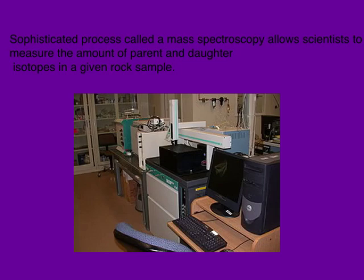Geologists can go out into the field and find rocks, grind them up, and then use a very sophisticated process called mass spectroscopy in order to measure the amount of the parent isotope and the amount of the daughter isotope in a given rock sample. That's going to help us figure out how old that rock is as an absolute measure — how many millions of years.